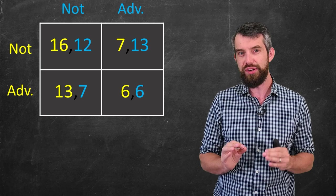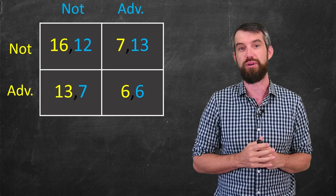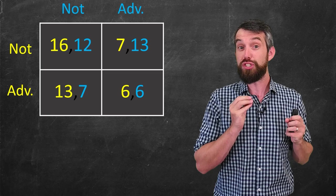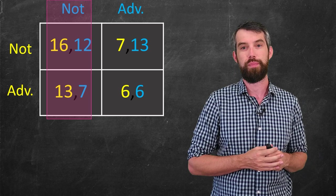So what I'm going to do is I'm going to think about this from firm one's perspective. I'm only going to look at the yellow numbers, the first numbers in every cell, because those are the numbers that are relevant to firm one. Now, if firm two, if I knew that firm two did not advertise, that would just say I was in this first column.